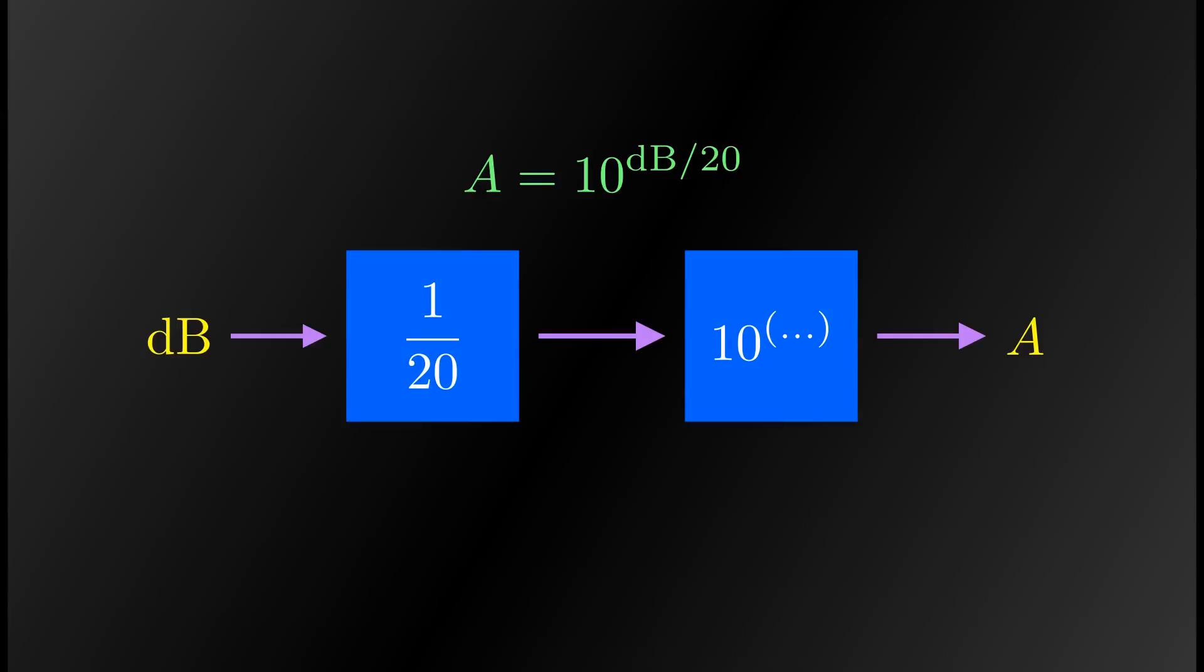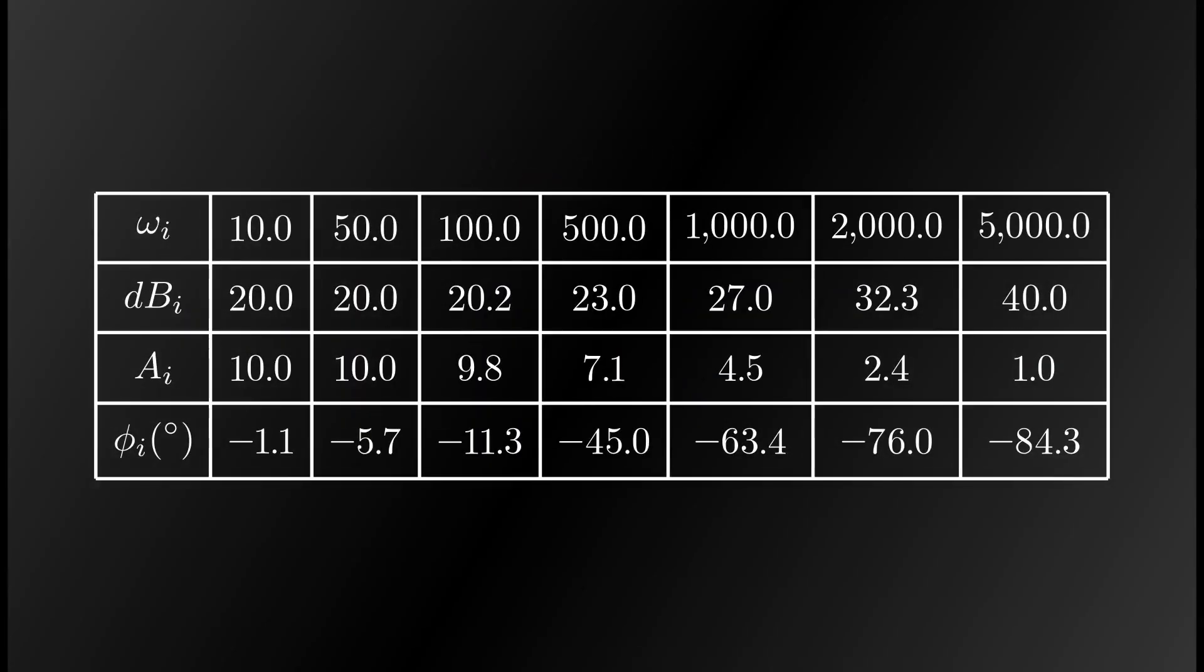Apply the same procedure to the amplitude of each harmonic to convert them into linear scale. They are displayed in the table. The phase lags do not need any modification. They are written in degrees instead of radians for convenience.